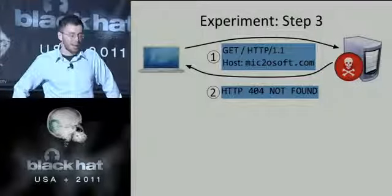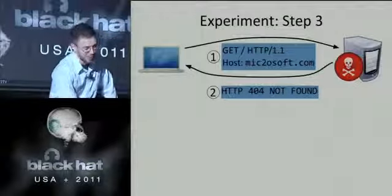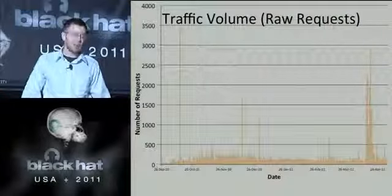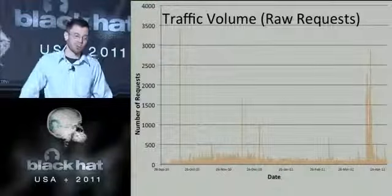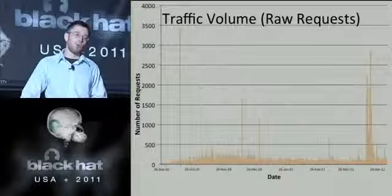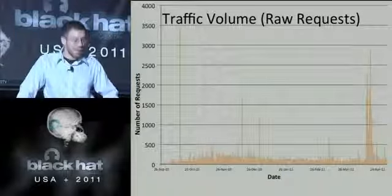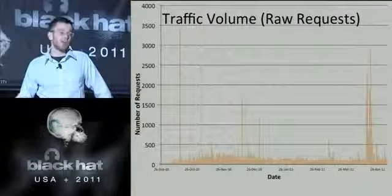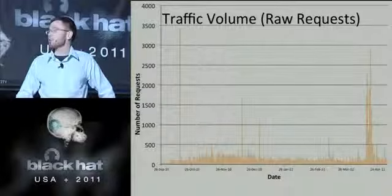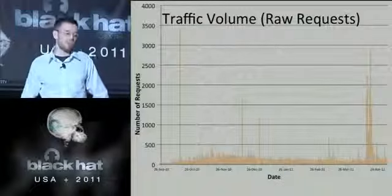Once you register those domains, set up your DNS listener, and set up your HTTP server, people actually show up. That was by far the biggest surprise — it actually worked, and I was surprised at the scale. This is a raw traffic log volume of HTTP requests, with multiple requests from the same IP counting. There's a steady background of random traffic with occasional spikes — the most I've seen was around 3,500 different HTTP requests per day.